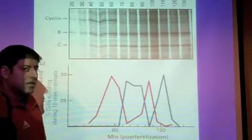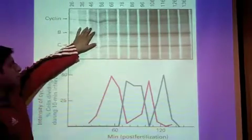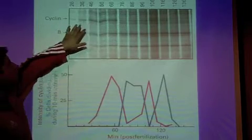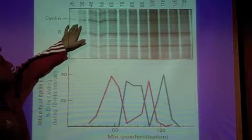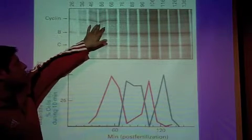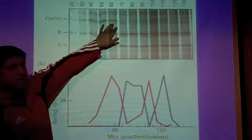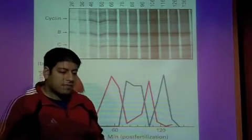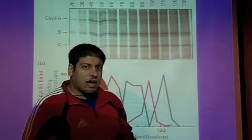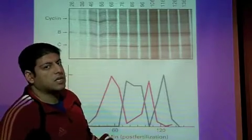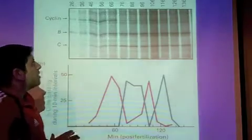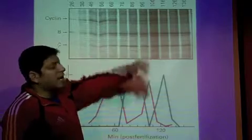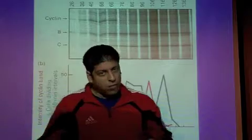Now let's take a look at the cyclin bands. Between 26 minutes and 46 minutes, the first three lanes here, we see the proteins start to develop. Between 46 and 66 minutes, we have a solid dark band here. So cyclin is present during the early phase of fertilization, at the early parts of fertilization. But then as you go over time, between minutes 76 and 86, the band for cyclin drops off or fades.